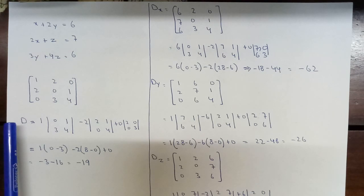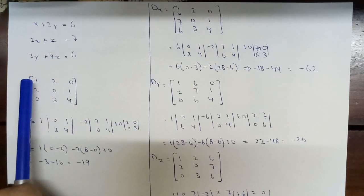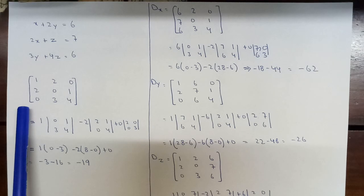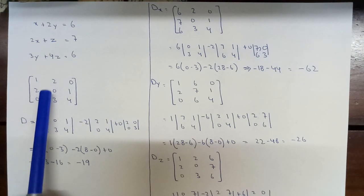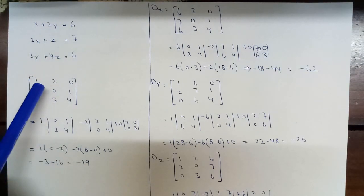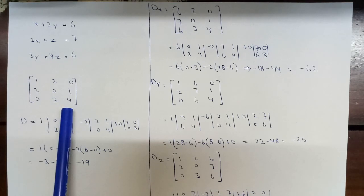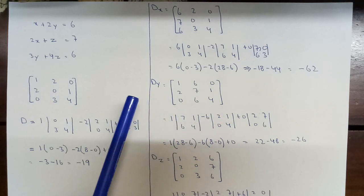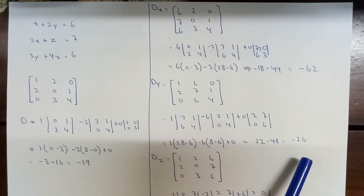In the same way we will write the determinant of y. We write the coefficients of x as they are, then replace the second column with 6, 7, 6, and keep the third column of z coefficients the same. We find its determinant, and the answer will be minus 26.